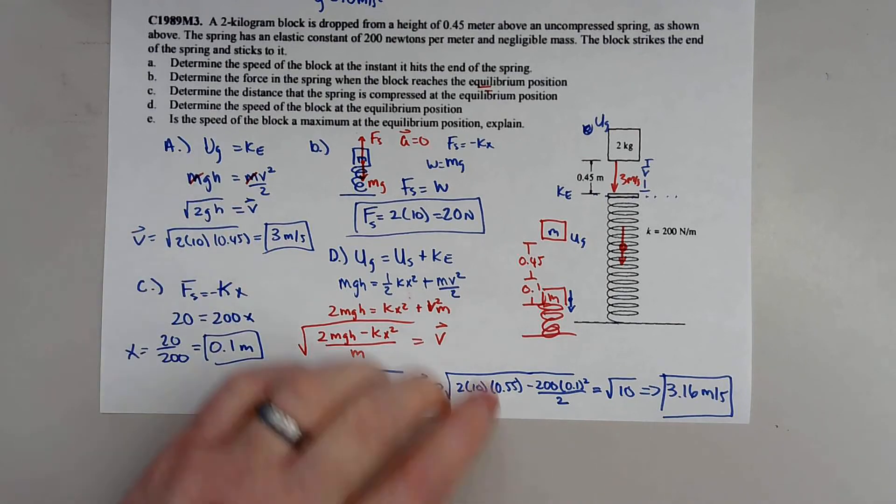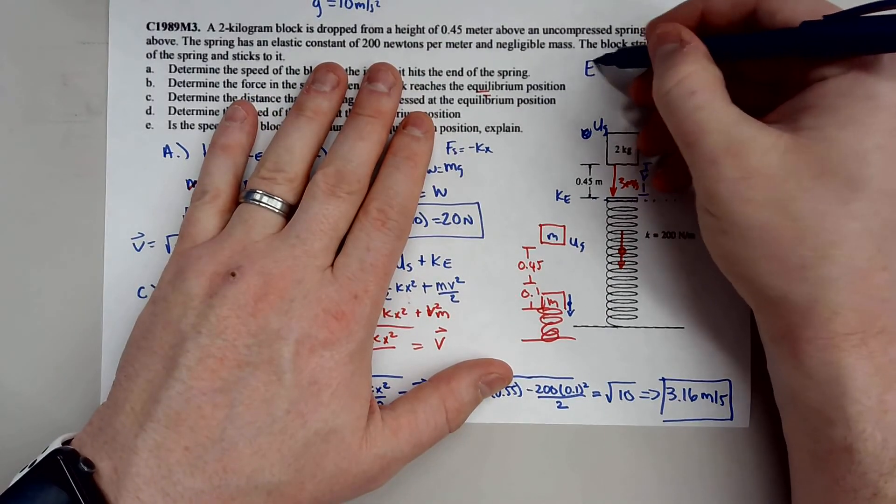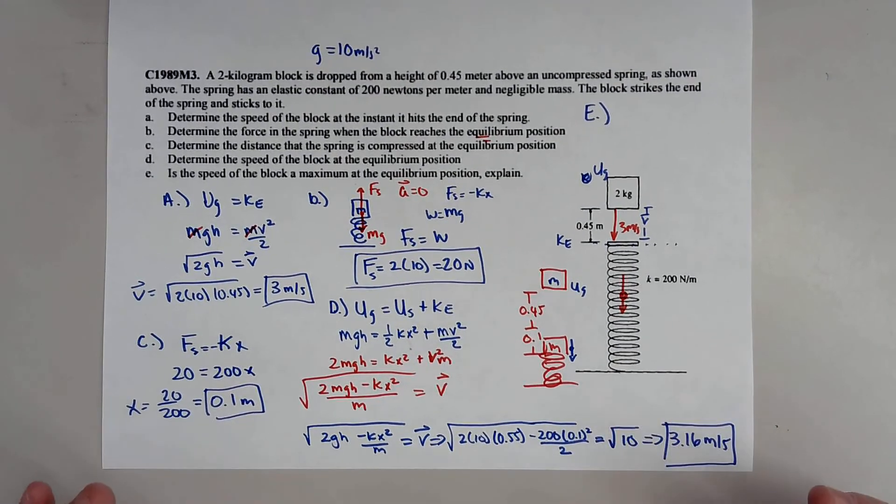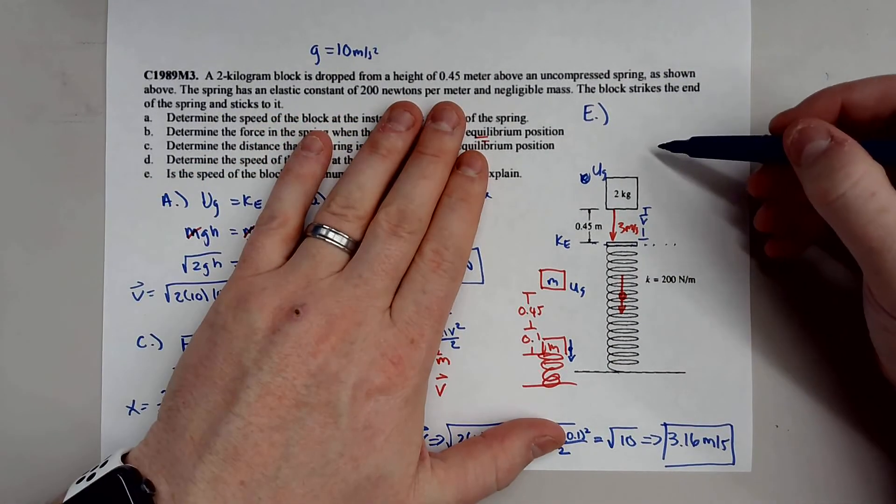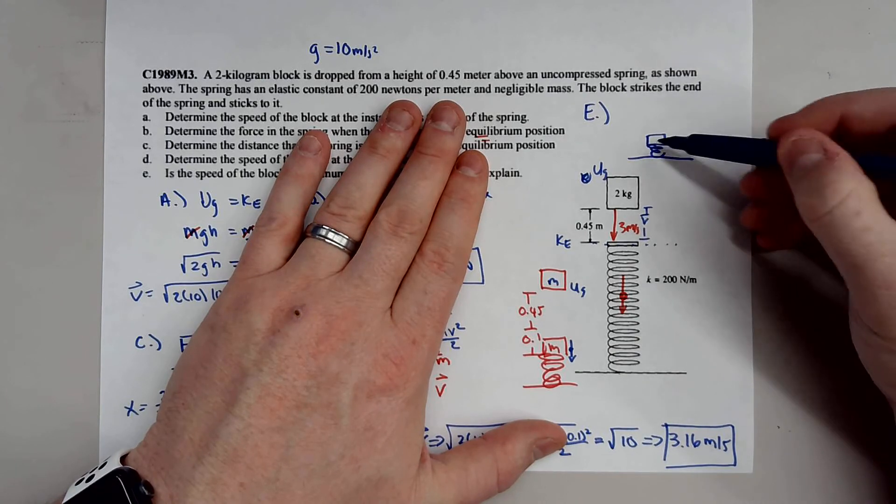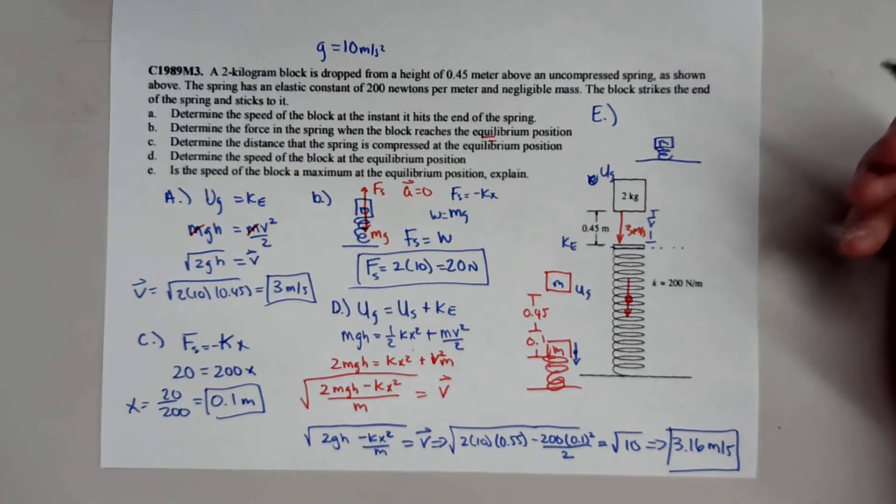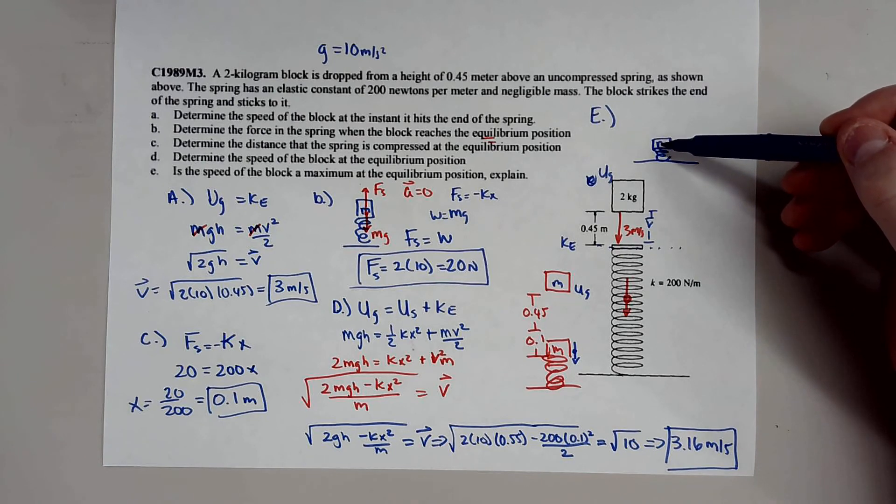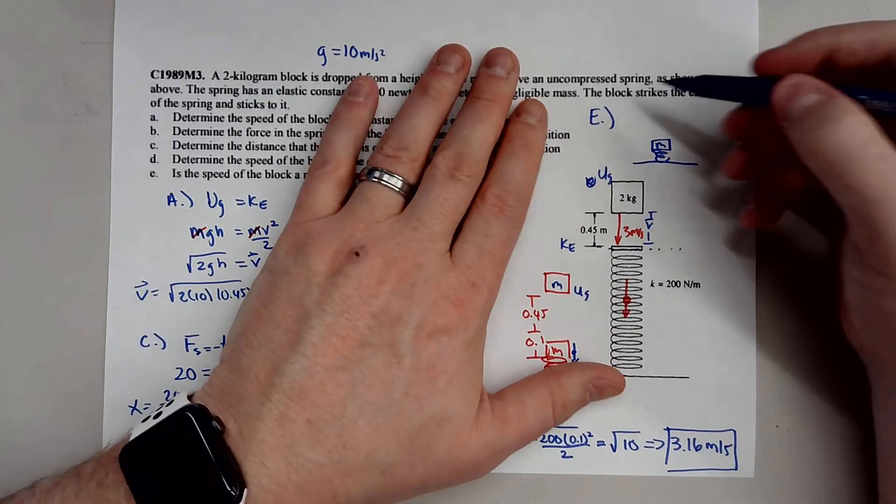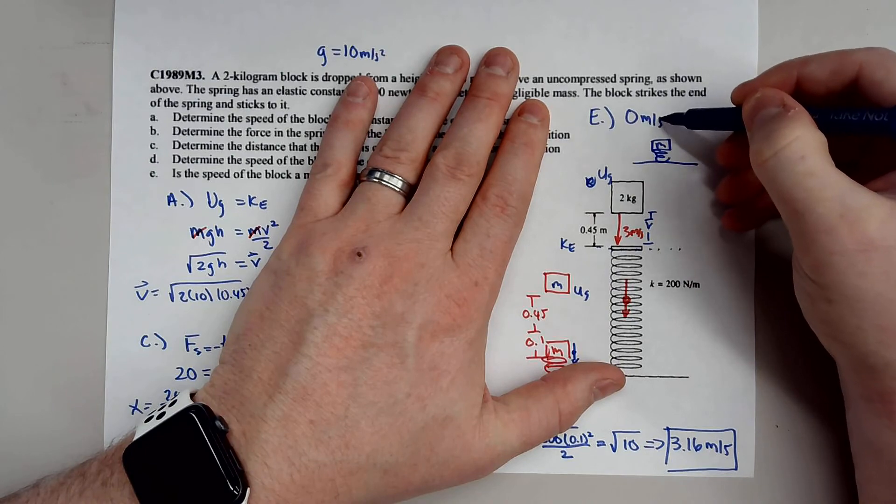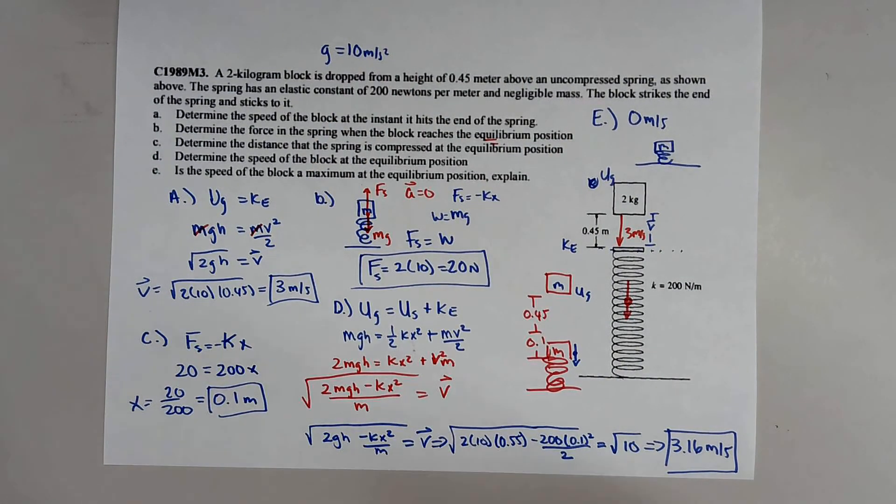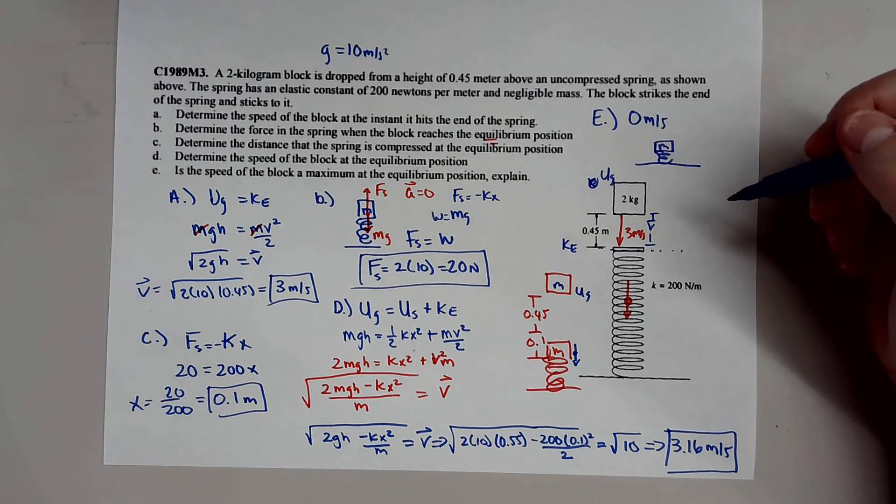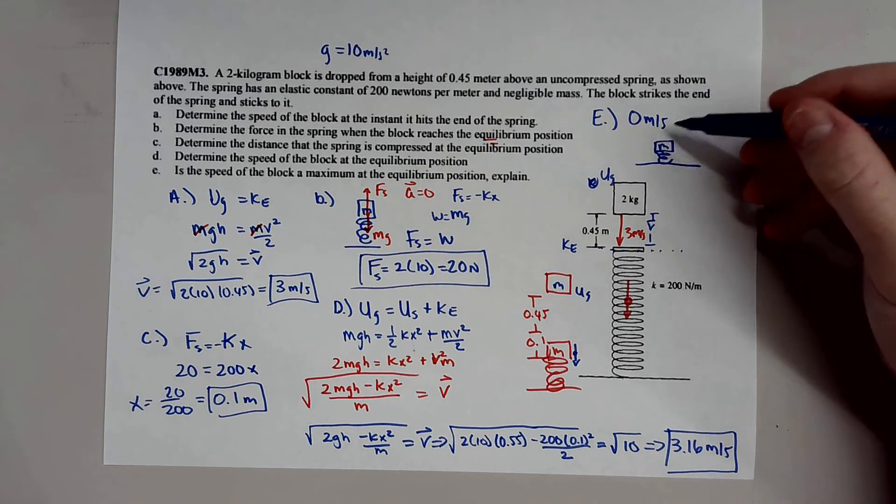And finally, Part E. I'm going to try to write E up here, sorry. E is the simple one. E is, what's the speed of the block at maximum displacement? So as this block totally compresses the spring, and that's going to be very simple. Because if you think about it, as the block compresses the spring at maximum displacement, the block is going to stop. So this is going to be 0 meters per second. So the block is going to stop momentarily before it's driven back upwards by the force or the energy inside the spring.